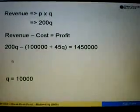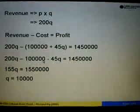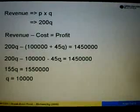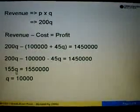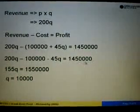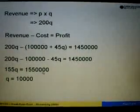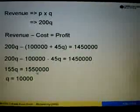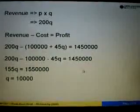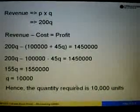Simplifying the left-hand side: 200Q minus 100,000 minus 45Q equals 1,450,000. So 155Q minus 100,000 equals 1,450,000, which gives 155Q equals 1,550,000. Therefore Q equals 1,550,000 divided by 155, so Q equals 10,000 units.